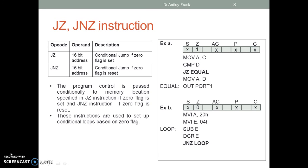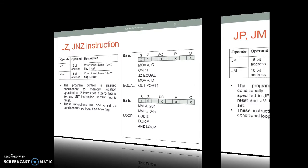Example A: JZ jumps to label 'equal' if the zero flag is set. Example B: JNZ jumps to label 'loop' if the zero flag is reset.